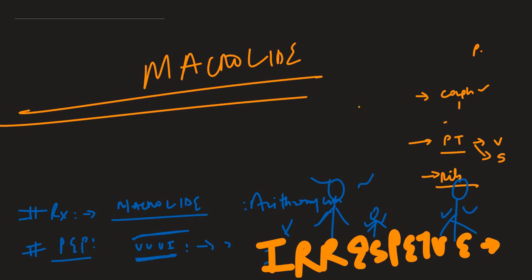So we've covered otitis media, rheumatic fever, RSV bronchiolitis, lymphadenopathy and its approach, complications of bronchiolitis, and pertussis with macrolide treatment. In the next video I'll be covering more concepts of infectious diseases related to pediatrics. I hope you enjoy this series — thank you so much.